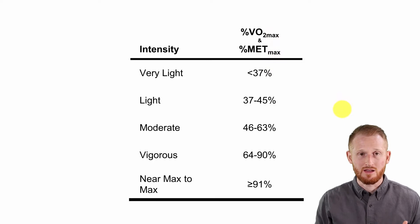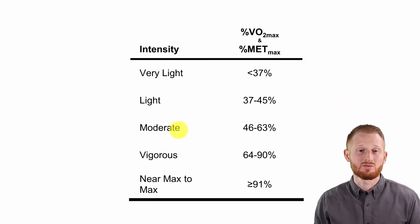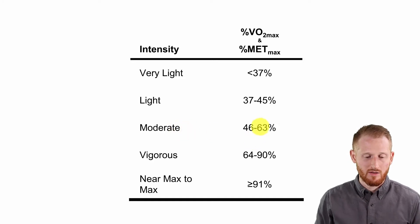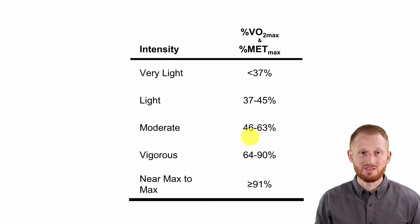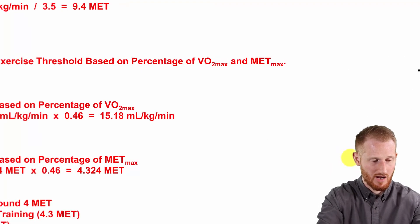Because our client here wants to work out in the moderate intensity range and specifically says she wants to work out at the low end of moderate, we're going to be calculating what we need to do in order to reach that 46 percent of VO2 max and MET max. So let's get back to our calculations here.